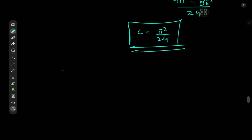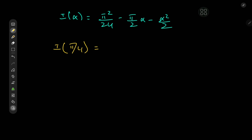So we have the complete formula: I(α) equals π²/24 minus π/2 times (α minus α squared / 2). Now for the two target cases. Given my relationship with basic arithmetic I probably should use a calculator, but let's proceed manually.